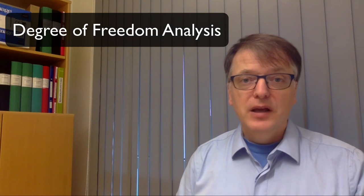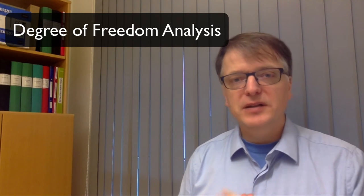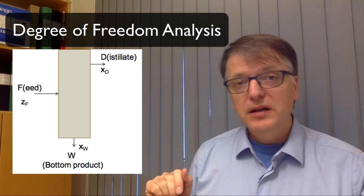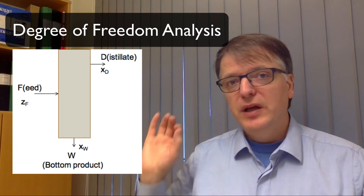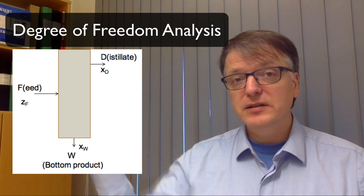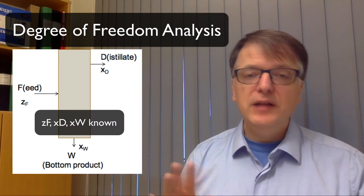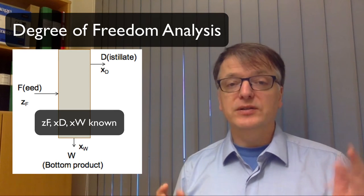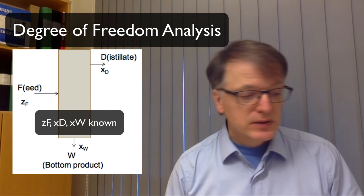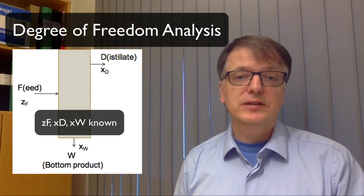Now in the first part of the course you did degree of freedom analysis, and let's try to do that for the distillation column. And we simply ignore now that you need energy balances as well. Just think about the mass balance. So we have the system and let's assume that we know the composition of the feed and we know what composition we want in the distillate and the bottom product, so we know three things. And let's assume that we only work with binary systems, so we only have two components. So try to do degree of freedom analysis for this.